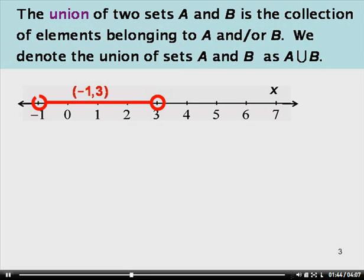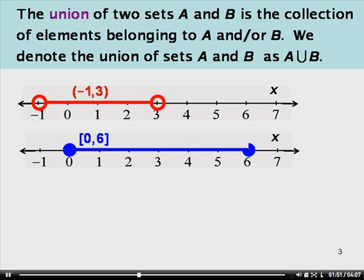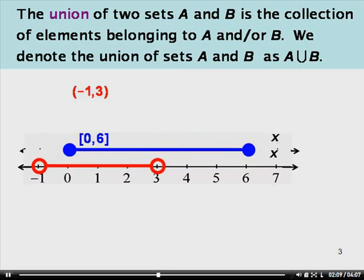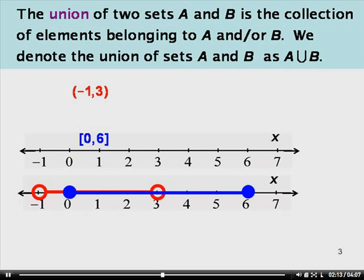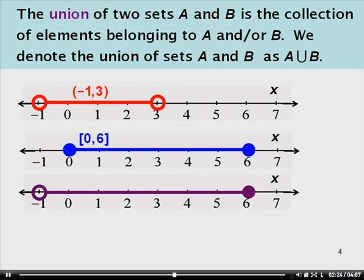Here's a graph of the open interval from negative 1 to 3. Notice the endpoints negative 1 and 3 are not included. Here's a graph of the closed interval from 0 to 6. Note that the endpoints 0 and 6 are included. What's the union of these two intervals? We want any points that are on either of these graphs. So if we take the collection of all of these elements, it looks like we start at negative 1 not included and end at 6 where 6 is included.